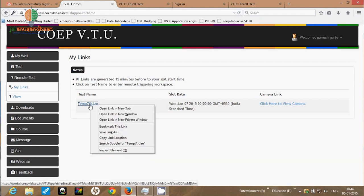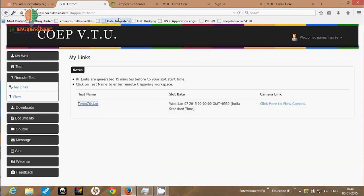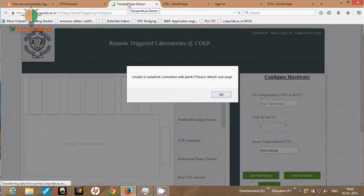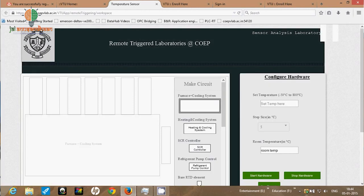After booking is done, you have to generate the remote triggered link. That will be available in your account for that particular date and time in the my link section. Once you click that link, the logic page will open and you have to build the logic over there. Then you can run the plant.